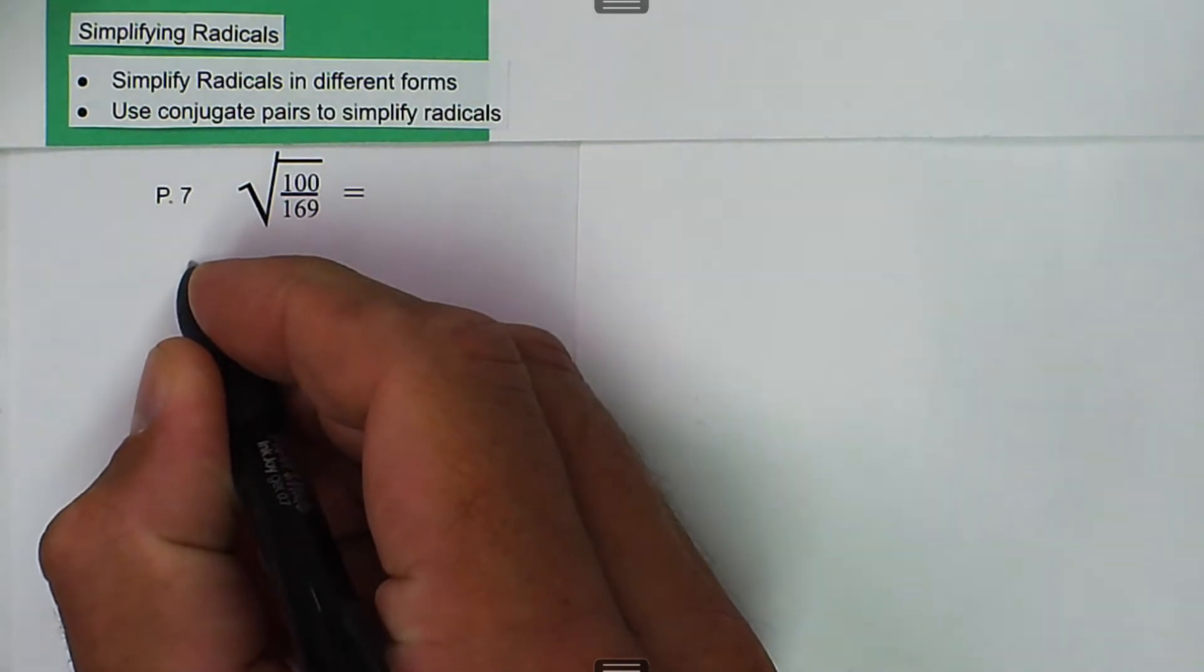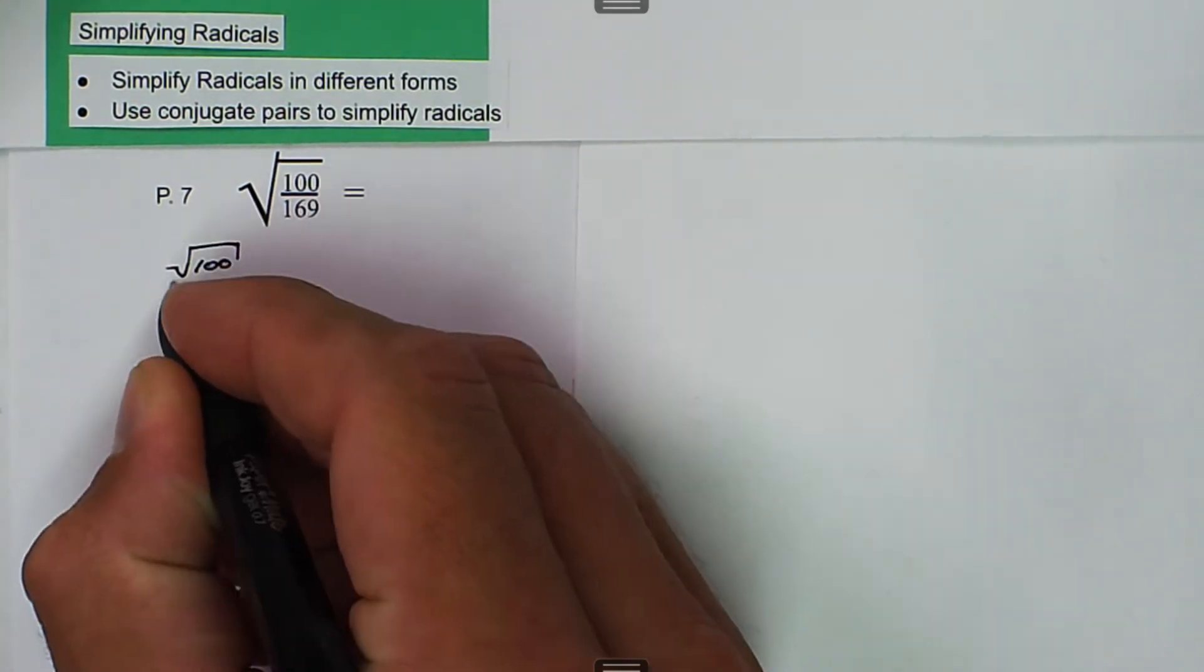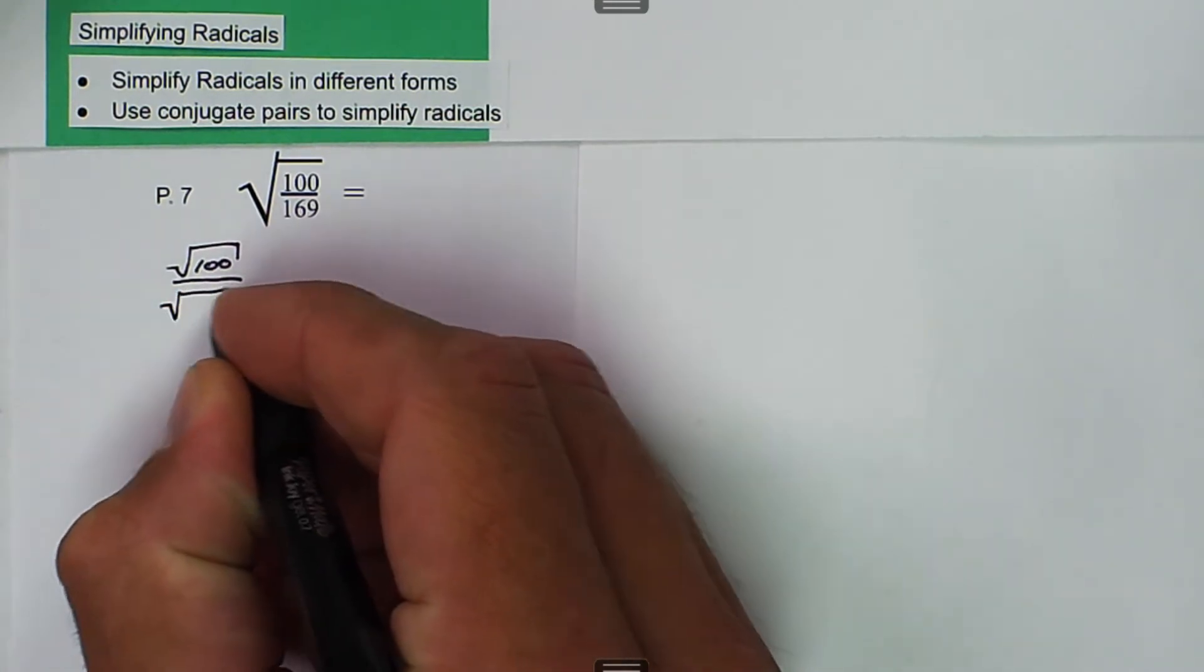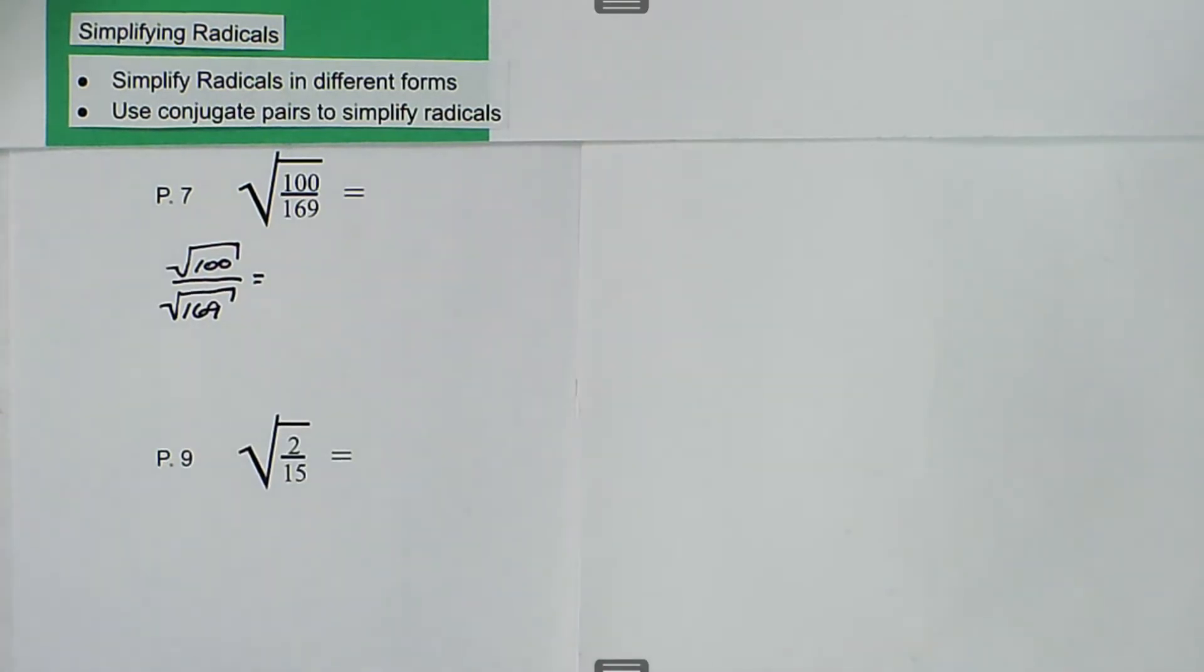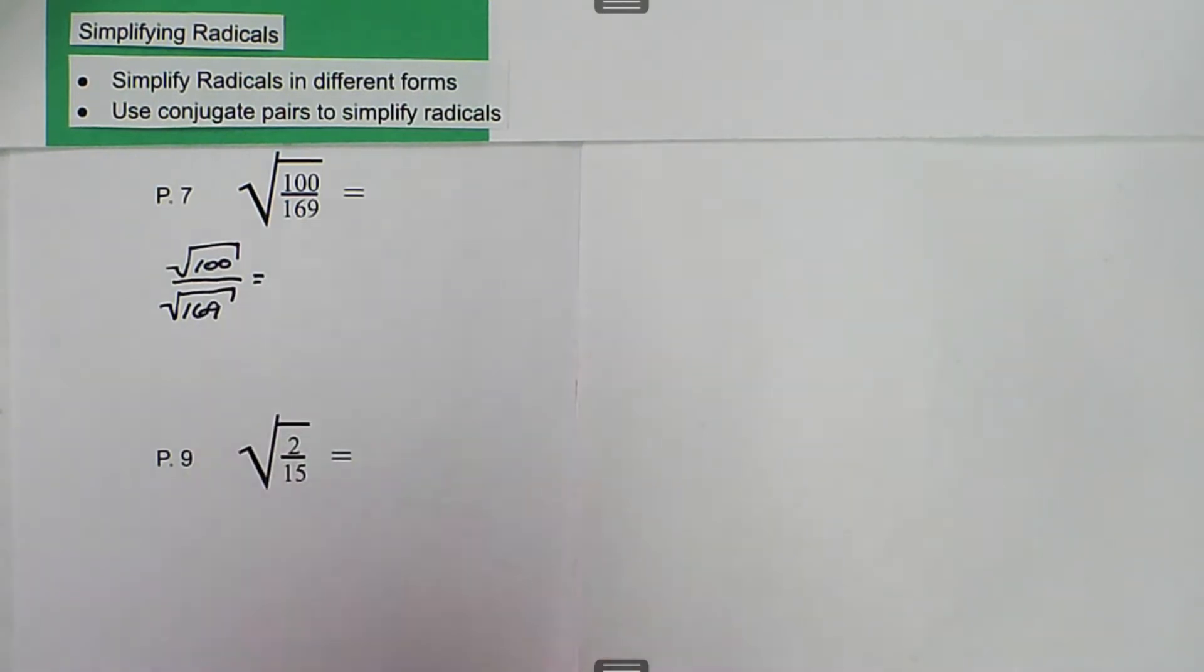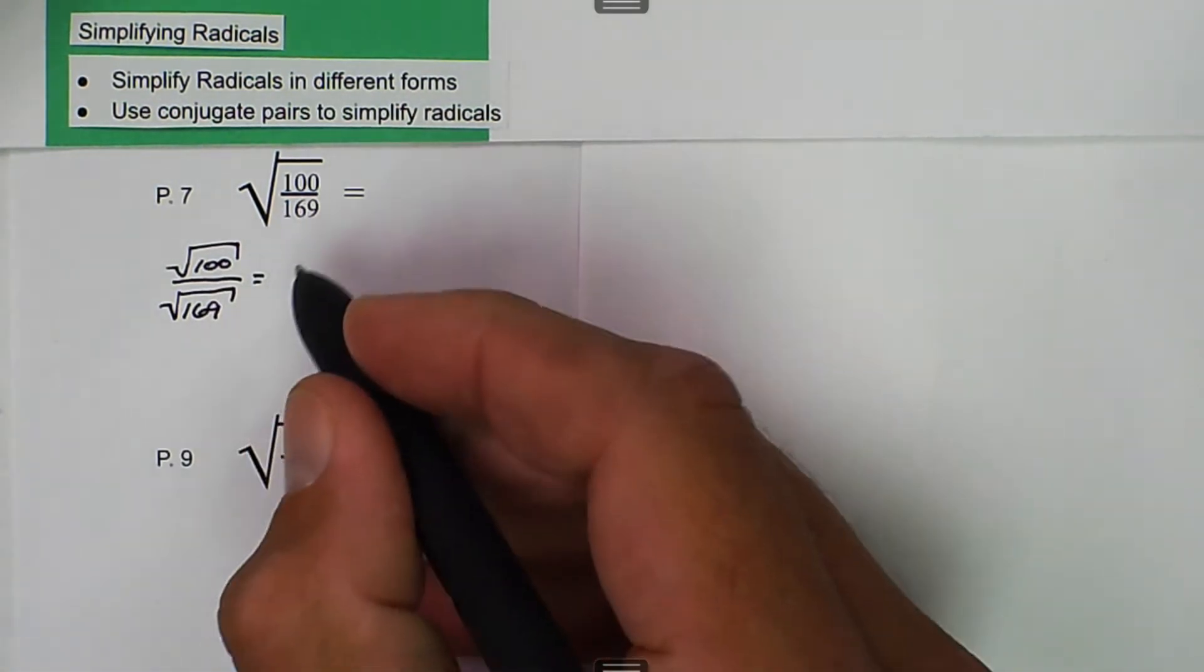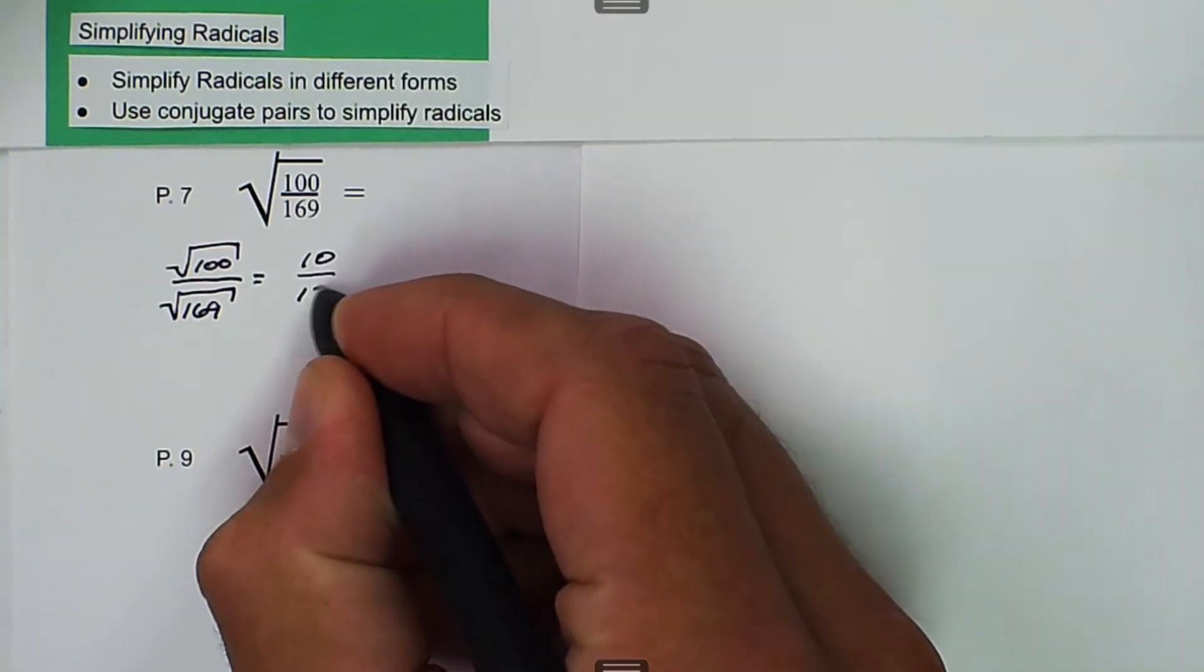So we can rewrite this as the square root of 100 divided by the square root of 169. Then we can use our calculator and type those in to get 10 divided by 13. That will be the solution for that one.